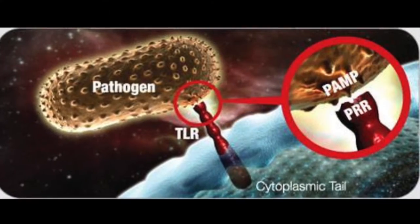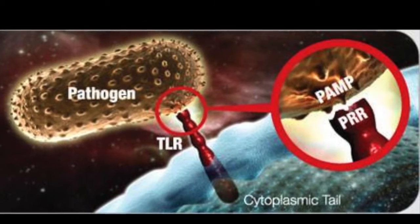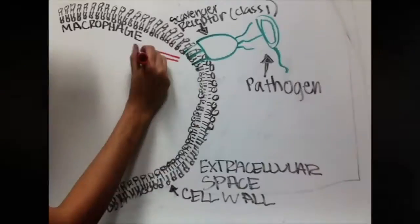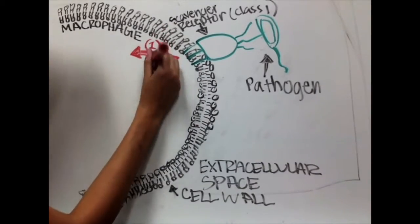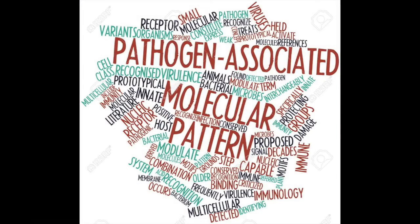When the scavenger receptor recognizes a PAMP or pathogen-associated molecular pattern on the surface of a foreign molecule, it binds and signals the macrophage or other immune cell to begin phagocytosis of the pathogen. A PAMP is simply a name tag or ID differentiating the foreign molecule from other molecules.